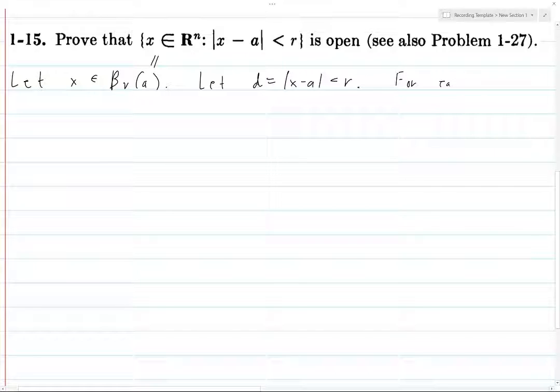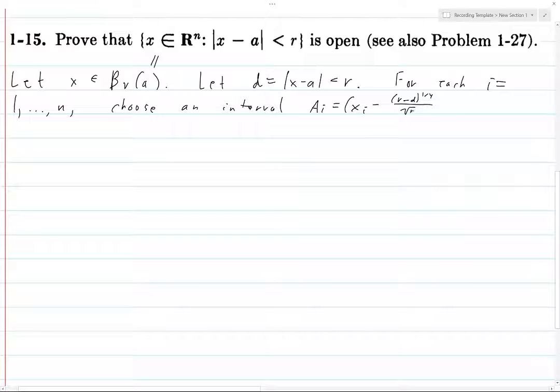For each i from 1 to n, choose an interval A_i equals (x_i minus (r-d)^(1/4)/√n, x_i plus (r-d)^(1/4)/√n).